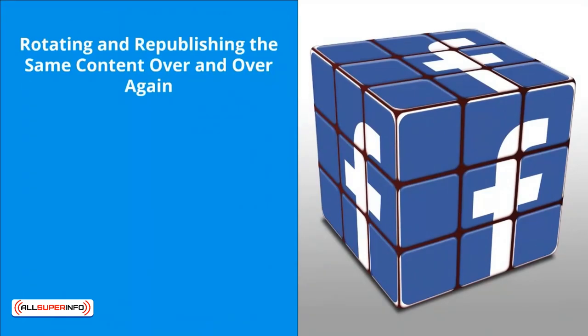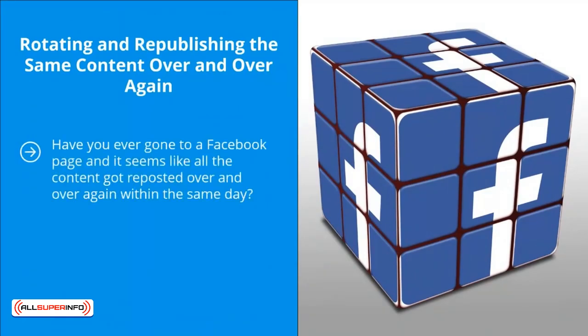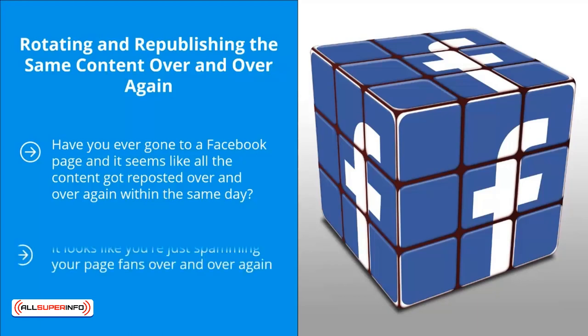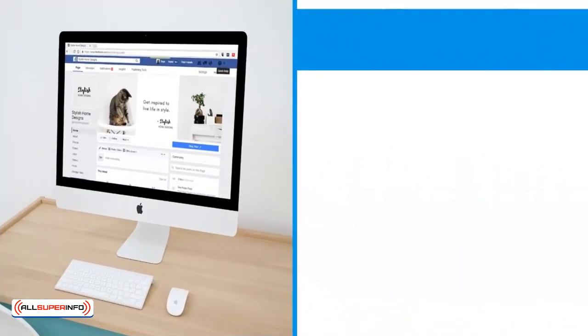Mistake six: Rotating and republishing the same content over and over again. Have you ever gone to a Facebook page where it seems like all the content got reposted over and over again within the same day? The idea behind this practice is that the more Facebook audience members see the content, the more likely they will click through. But it looks like you're just spamming your page fans. Don't be surprised if they unlike your page.